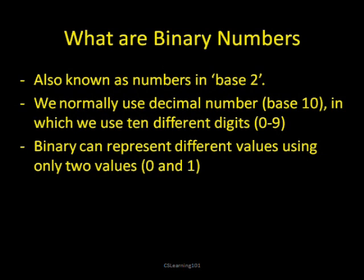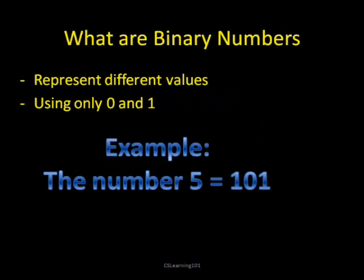Since we're talking about binary numbers, I should tell you what exactly they are. Some people refer to them as numbers in base 2. Think of numbers that we normally use — we normally use a decimal number system, which is also called base 10. We call it base 10 because we can use 10 different digits, that is 0, 1, 2, all the way up to 9. Binary numbers are in base 2, so they can only represent different values using only two numbers: 0 and 1.